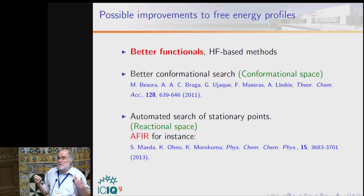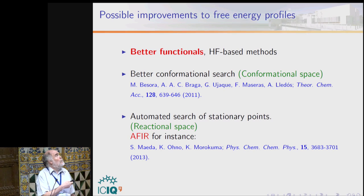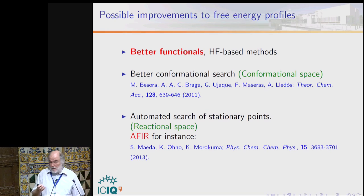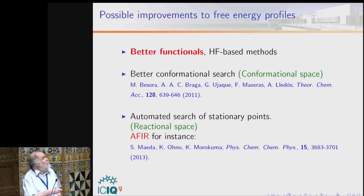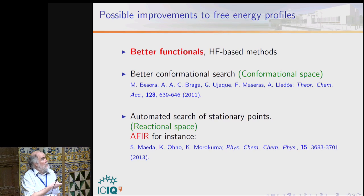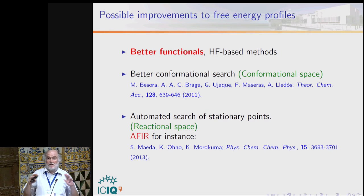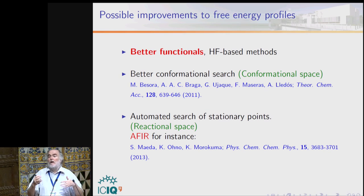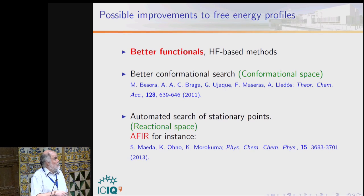These free energy profiles are computed with a given method, and there are always improvements that can be made — better functionals, better Hartree-Fock-based methods like CCSD(T) and LPNO, as discussed in Professor Thiel's lecture. There are also conformational space issues: in homogeneous catalysis with phosphines or NHCs with pending ligands, alkyl chains can create conformational issues. And there is the issue of reaction space, which can be solved by the automated search of stationary points.